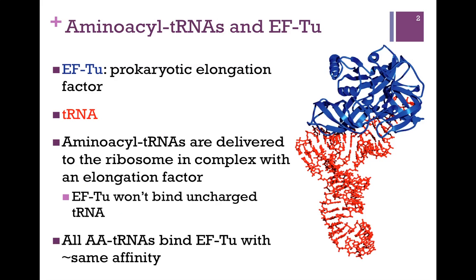First, we have EFTU. This is the prokaryotic elongation factor. In our illustration here, EFTU, the protein, is highlighted in the ribbon diagram in blue, and it's bound to a tRNA molecule shown in stick model in red. This tRNA would be properly charged with its amino acid. So the aminoacyl tRNAs are delivered to the ribosome in complex with EFTU. It will not bind uncharged tRNA, and it has approximately the same affinity for any aminoacyl tRNA.